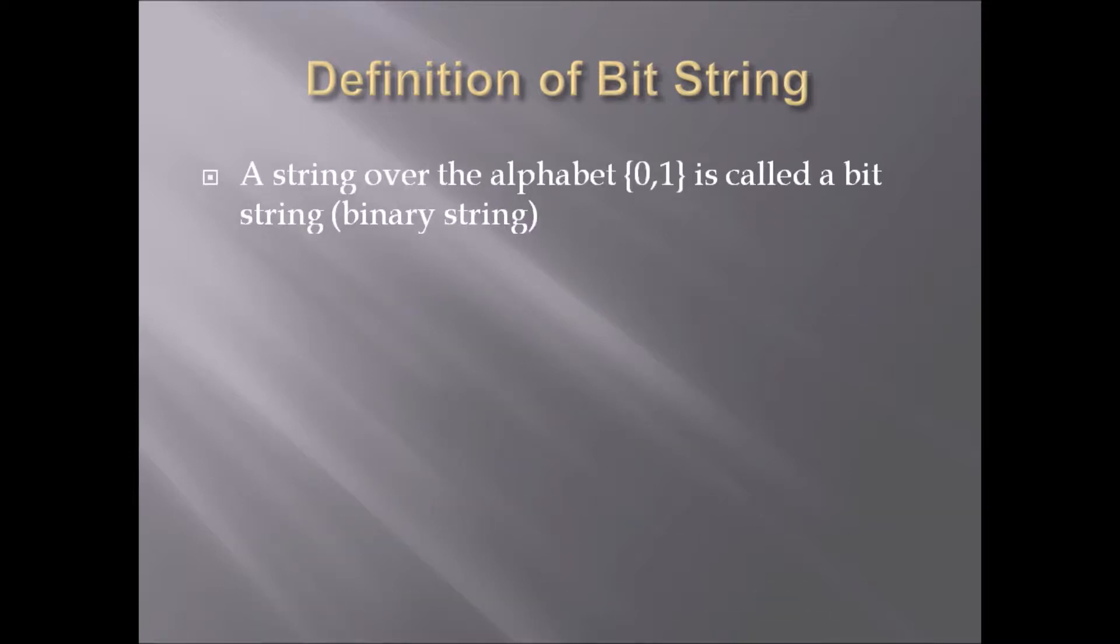A string over the alphabet {0,1} is called a bitstring. It's a pretty simple definition - any string that just has zeros and ones is a bitstring. Likewise, a string over the alphabet {0,1,2} is called a ternary string. These you see every so often, not as much as bitstrings though.